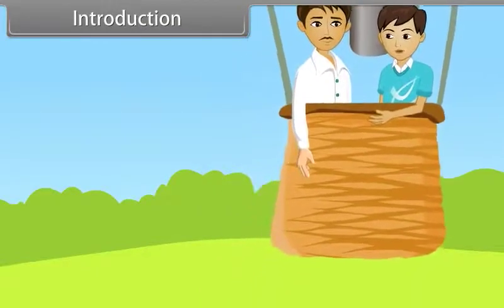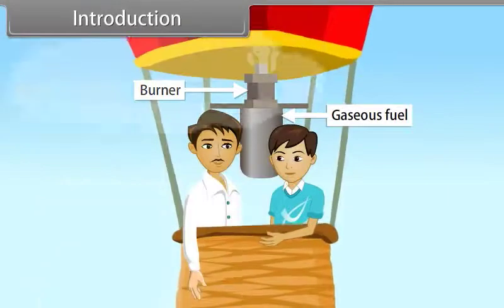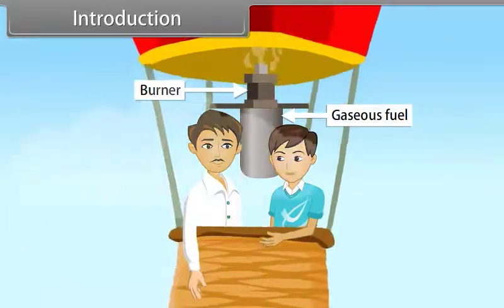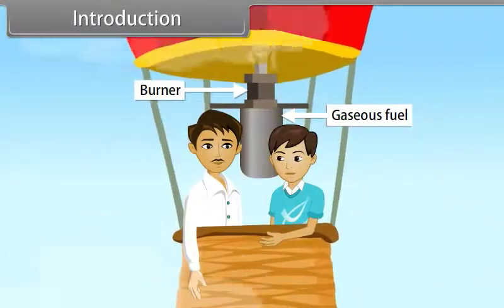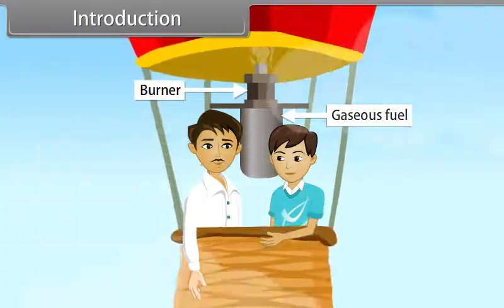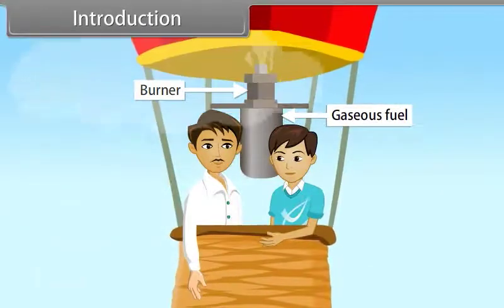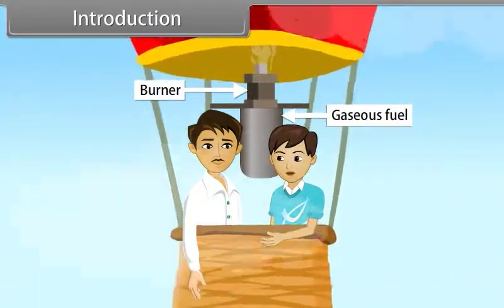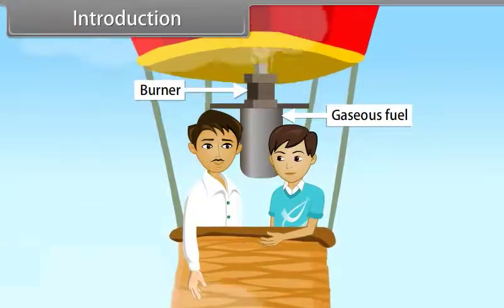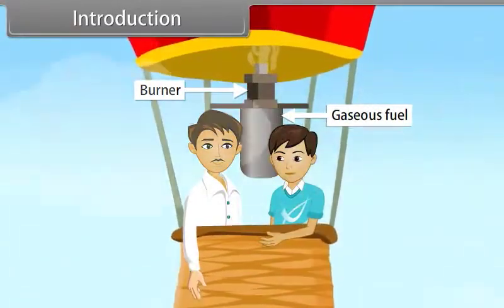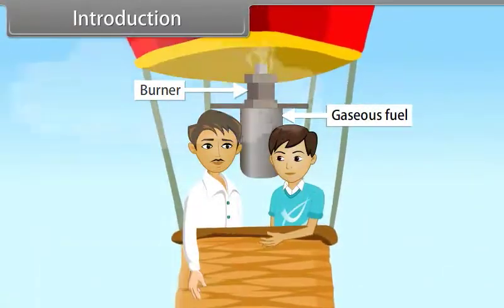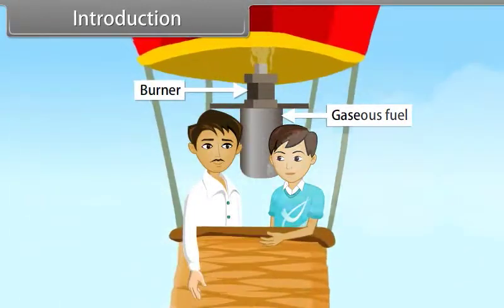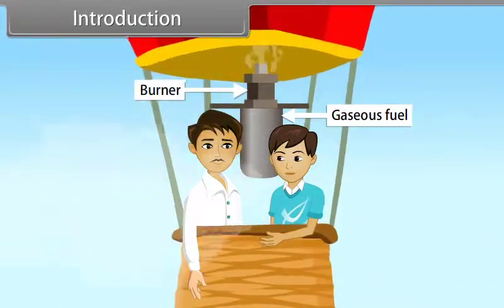I want to ask you something. Yes Rohit, tell me — how does it get into the air? In this, we use gaseous fuel to heat up the air in the envelope to move the balloon off the ground and into the air. One more thing I want to share with you: the gaseous state has no definite shape. In this lesson, you will learn about the gaseous and liquid states of matter.